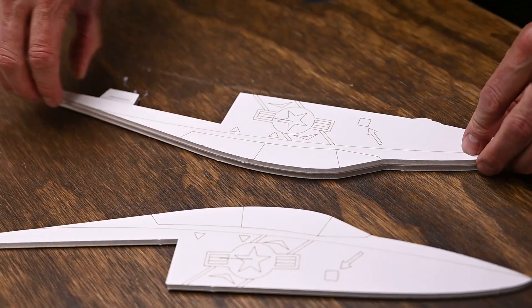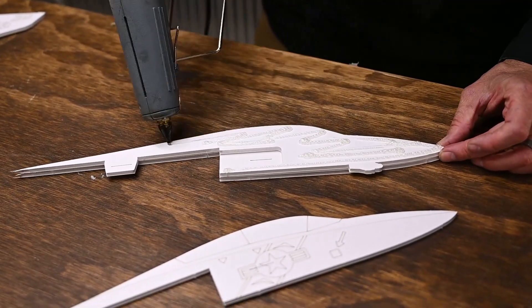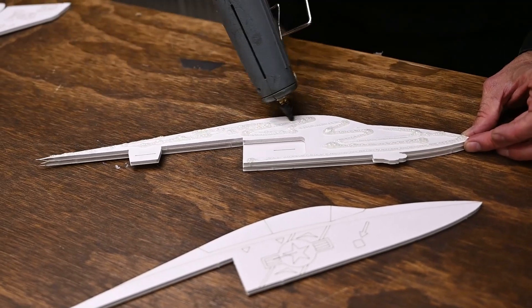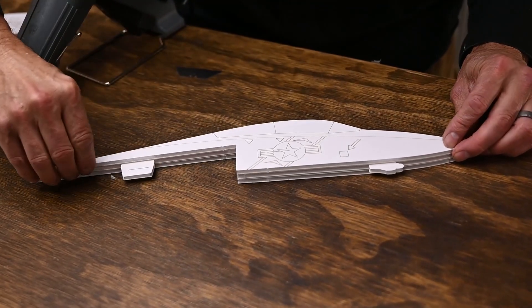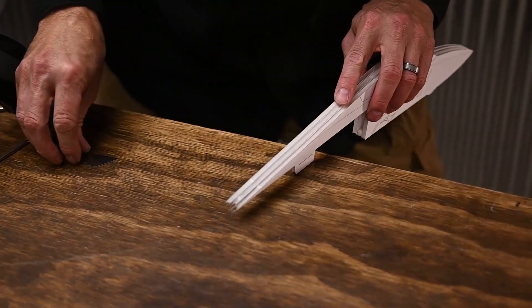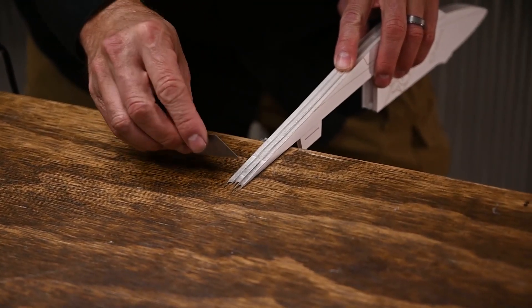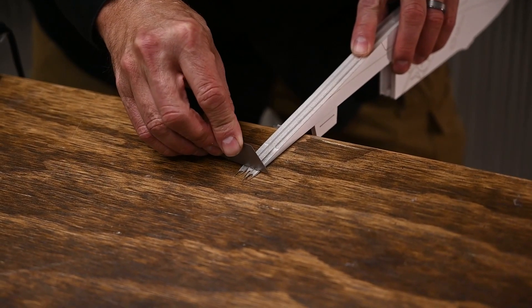Then we're going to do the same thing on the other side. Once that's done, we're going to cut off all of this excess here at the back. When we do that, we now have a nice clean edge.